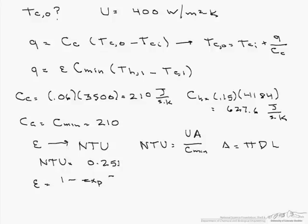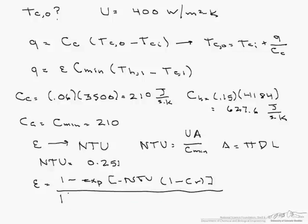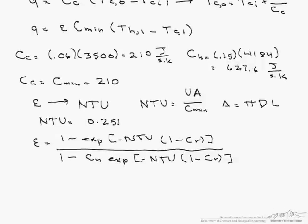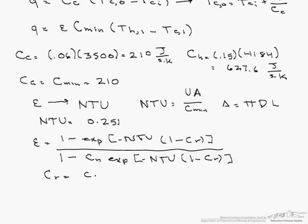From that we can use it to find our effectiveness, which is 1 minus the exponential of minus NTU times 1 minus C_R divided by 1 minus C_R exponential of minus NTU times 1 minus C_R. What is C_R? C_R is just equal to C_min divided by C_max. Our C_min is 210, our C_max is our C_H, 627.6, so this equals 0.335. When we calculate our effectiveness, it is 0.215.